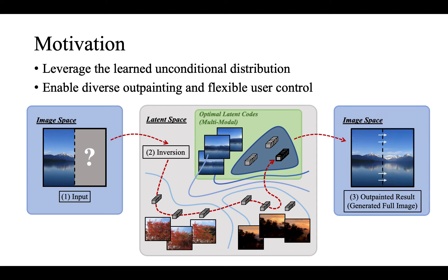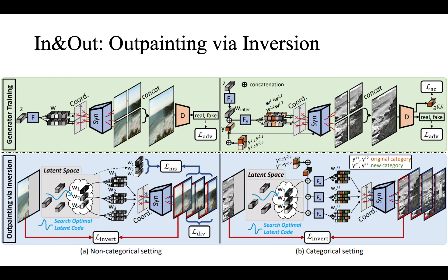We want our pipeline to support diverse outpainting and also enable flexible user control. For example, we can specify what category to be generated in the outpainting region. There are two different settings: non-categorical and categorical. And there are two stages: the generation stage and the inversion stage.